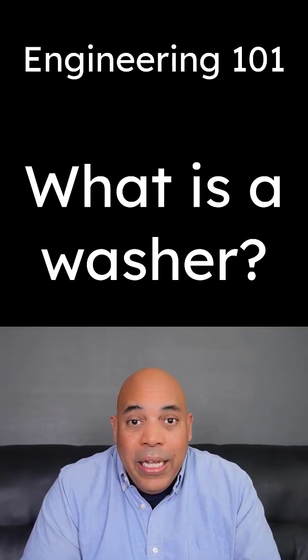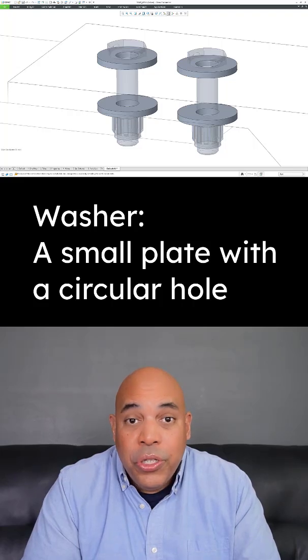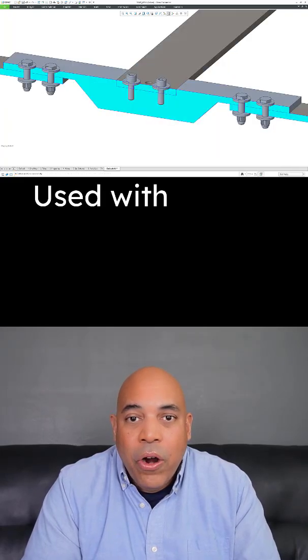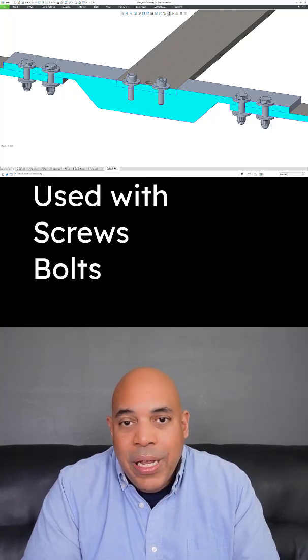A washer is a small plate with a circular hole, usually in the center. They are used with fasteners such as screws, bolts, and nuts.